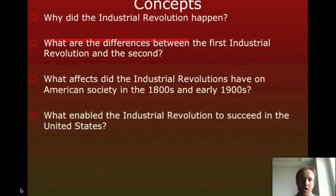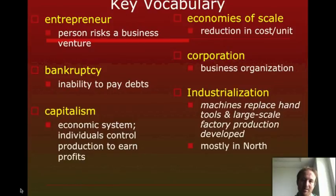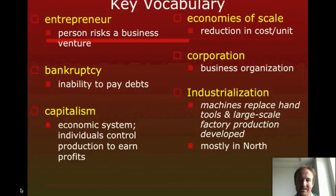On this next slide, same idea as the concepts slide — this one is titled 'Key Vocabulary,' and the big similarity is that we don't want to write any of this down. You have terms like entrepreneur, bankruptcy, capitalism, all the way through industrialization. We're not going to write any of these down because they are posted online and you can always go back and review them.